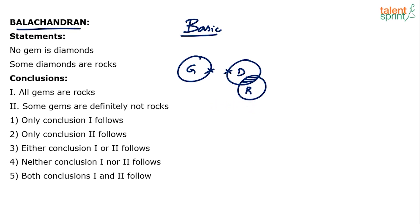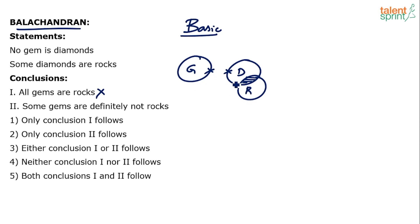Now look at the conclusions. Conclusion number one: all gems are rocks. In the basic diagram itself it fails, because when you observe the basic diagram, gems and rocks do not touch each other at all. There is no overlapping between gems and rocks. So how can you say all gems are rocks? All gems are rocks is definitely false.